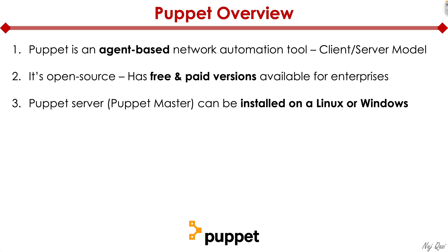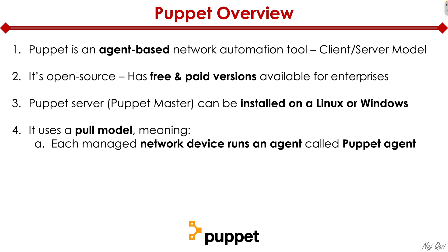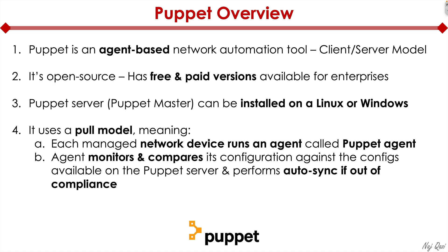The Puppet server, also known as Puppet master, can be installed on Linux or Windows. It also uses a pull model, very similar to Chef. Each managed network device runs an agent called Puppet agent. That agent monitors and compares its configuration against the config available on the Puppet server.